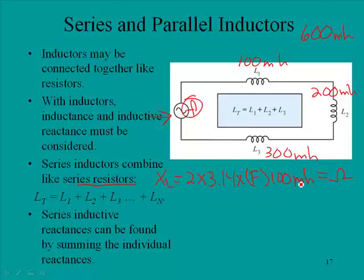The easier way would be to say XL equals 2 times 3.14 times the frequency, and multiply that by the total inductance of the circuit. That gives us our total reactance in ohms. These would add just like in a series resistance circuit.